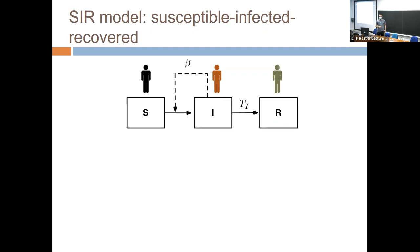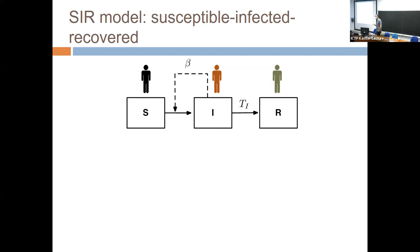We have a population divided into fractions — you can think of these as densities or rescaled by population size — of individuals that are susceptible (S), infectious (I), or recovered/removed (R). Infectious individuals come into contact with susceptible individuals at some rate beta, there's a transmission event, and the infectious individuals recover over a characteristic time period T_i.